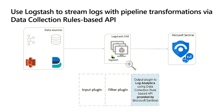You have a bunch of different data sources — these can be just about any type you can imagine. In this case, we've got Amazon resources, stuff coming from a Beats plug-in, from a database, from IoT devices, whatever it is. These data sources can be any number of things.